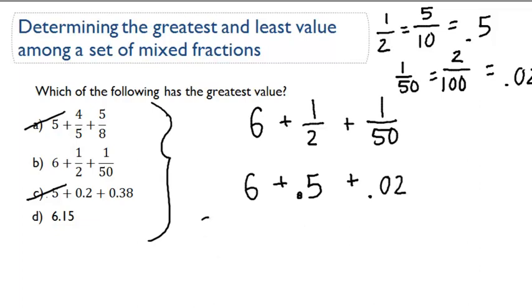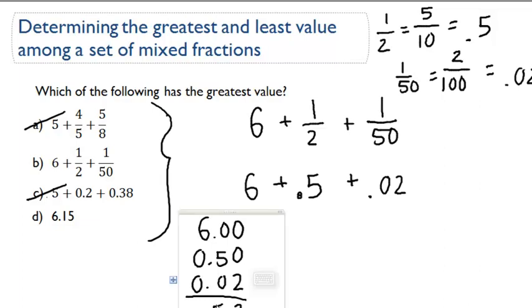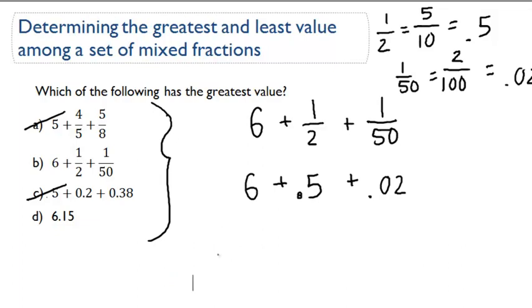If I add these up, which I'll do right now, let's do this up here: 6, 0.50, and 0.02. If I add these up, I get 2, 5, bring my decimal place down, and 6. So 6.52. This is equal to 6.52.